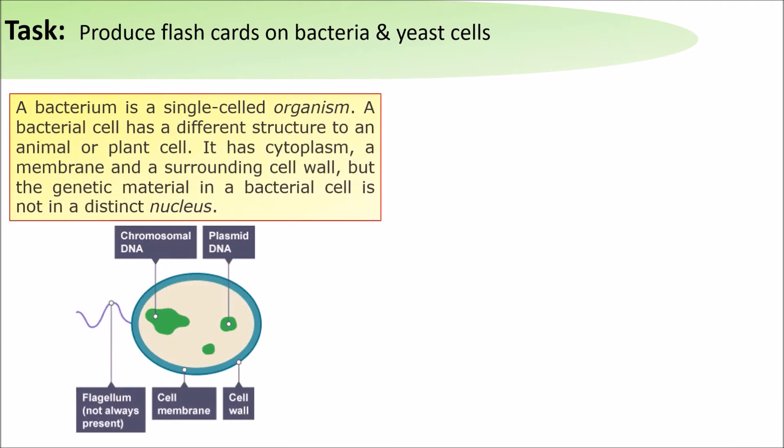A bacterium is a single-celled organism. The bacteria cell has different structures to an animal and plant cell. It has cytoplasm, a membrane surrounded by a cell wall, but its genetic material is either in the form of a plasmid or is delocalized like DNA.